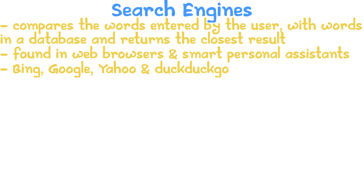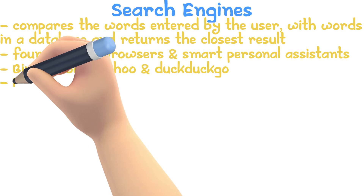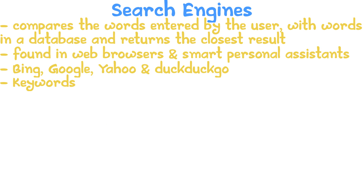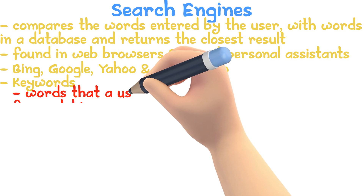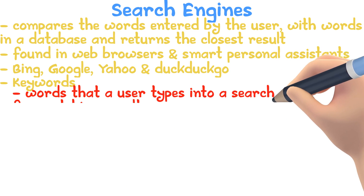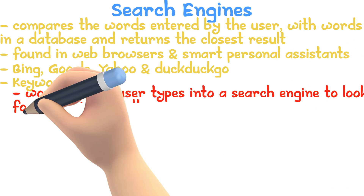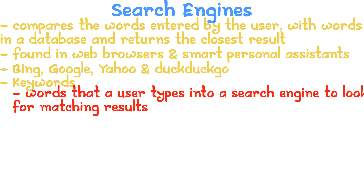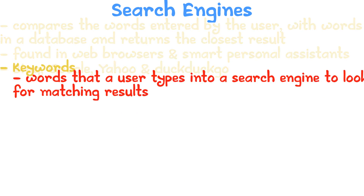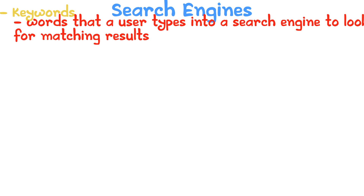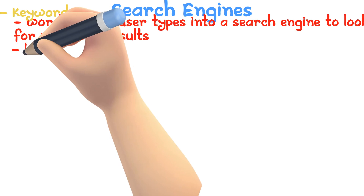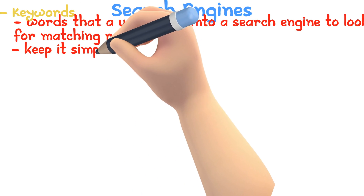Now let's take a look at some of the features of search engines. Keywords are the words that a user types into the search engine to look for matching results. When entering words into a search engine, make sure to only enter the important keywords so that you keep it simple.